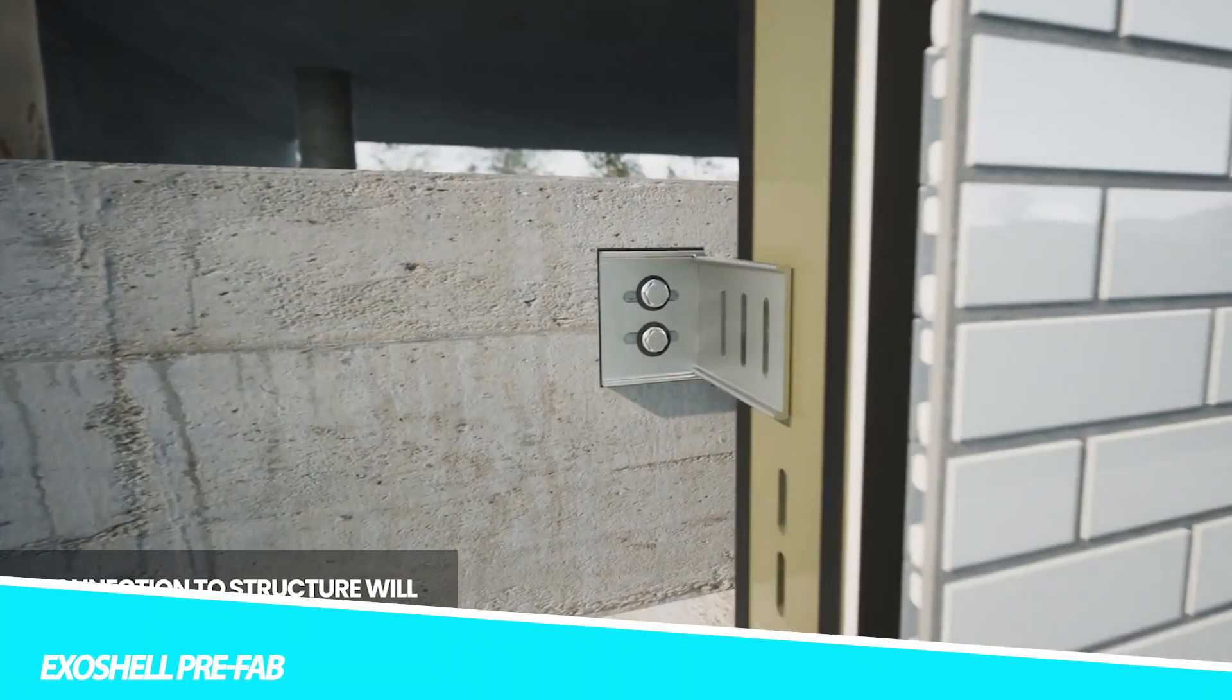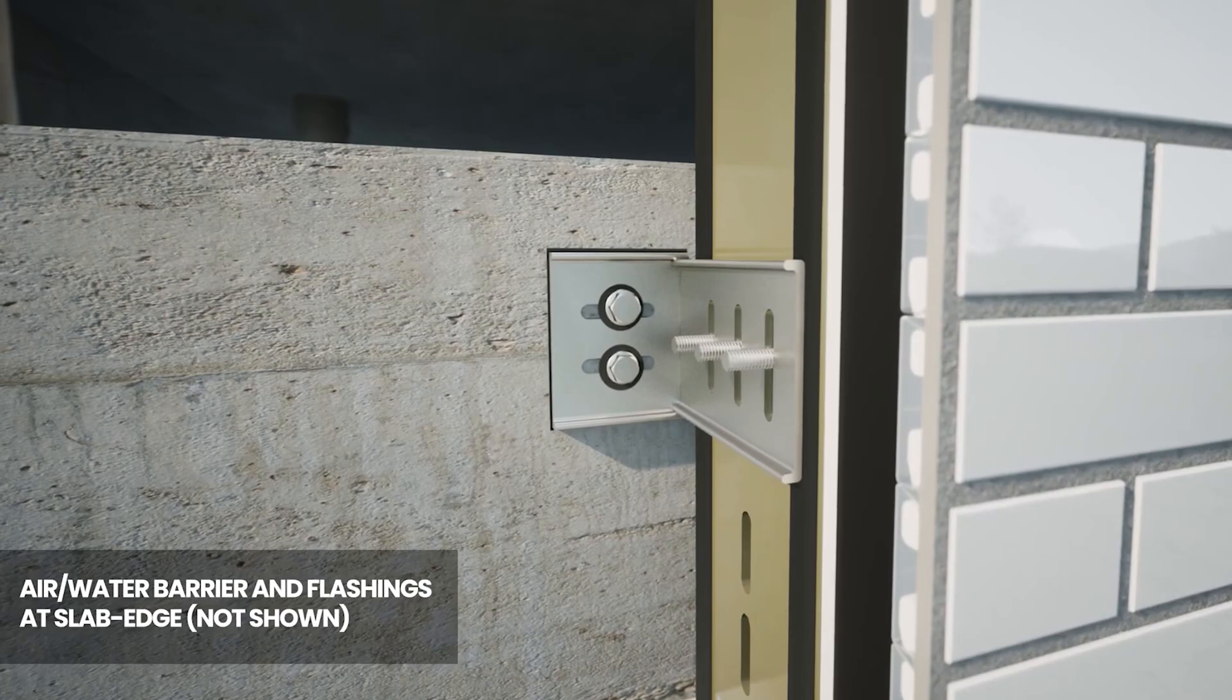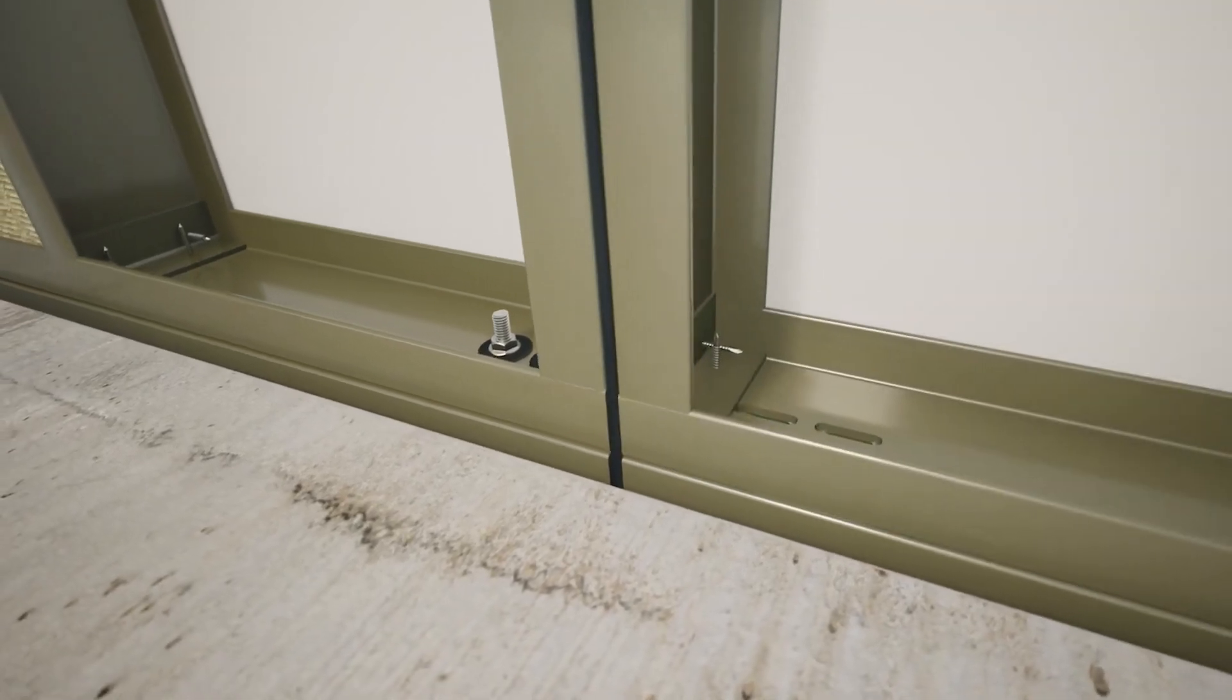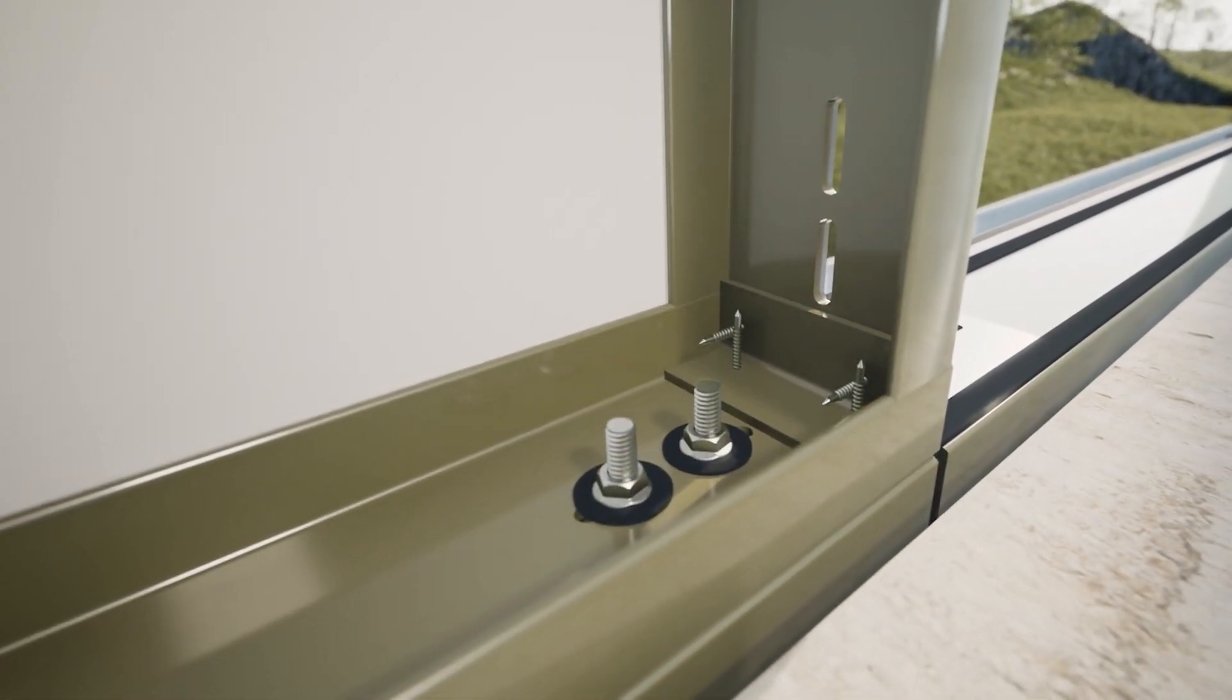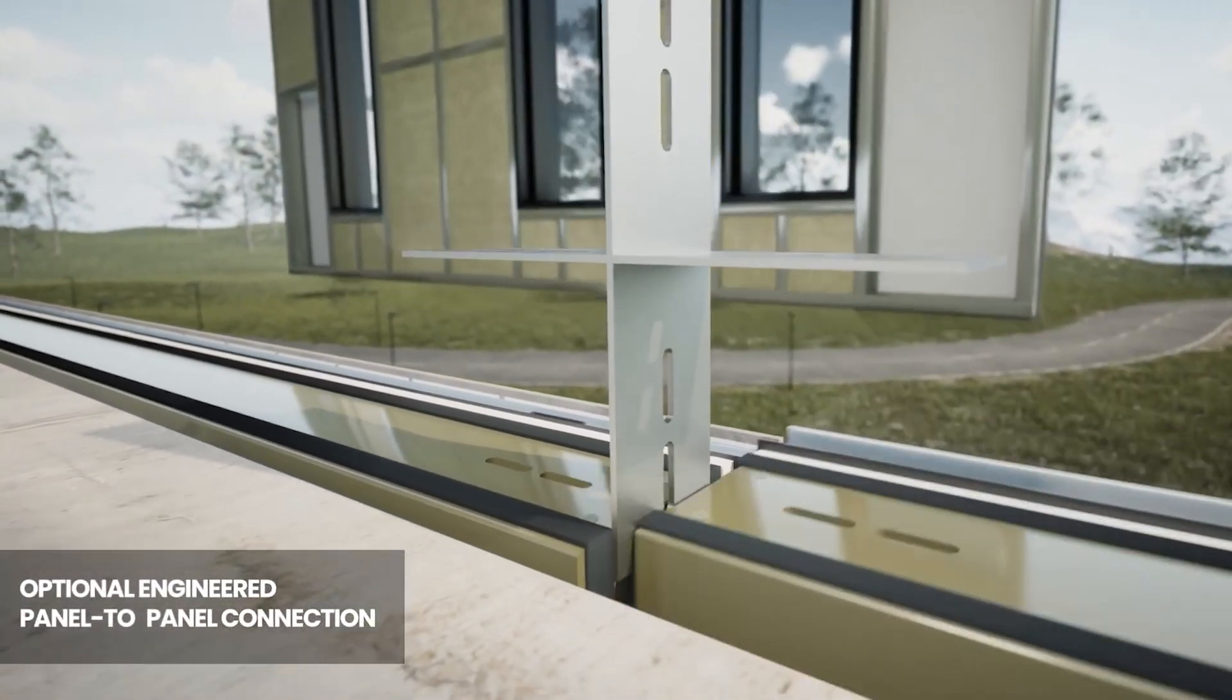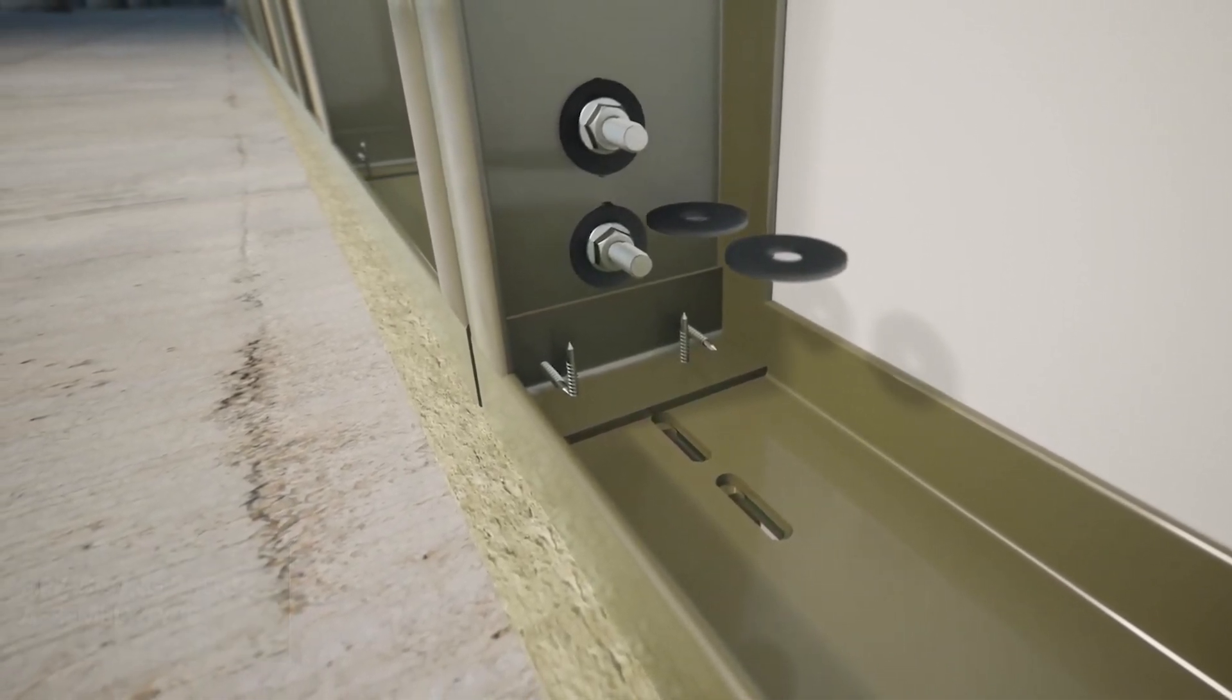Exoshell Prefab is a type of construction technology that offers a fast and cost-effective solution for building construction. It is a prefabricated building system that uses lightweight, modular panels made of advanced composite materials to create durable and energy-efficient structures. The Exoshell Prefab system is designed to be highly flexible and customizable, with a range of panel sizes, shapes, and finishes available to meet the needs of different construction projects. The panels are manufactured off-site then transported to construction site for assembly, resulting in a fast and efficient construction process. One of the key benefits of the Exoshell Prefab system is its energy efficiency.